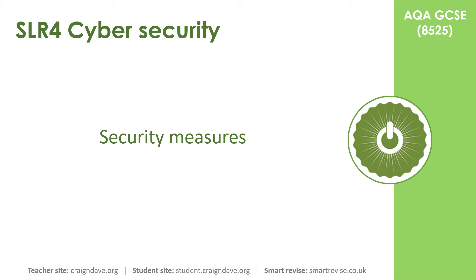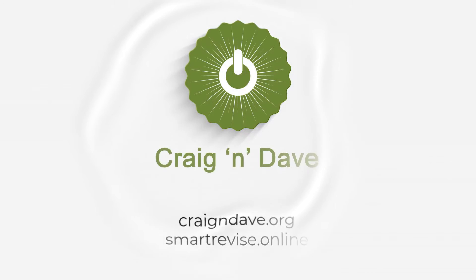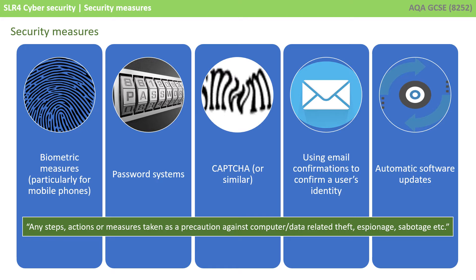In this video, we look at some of the security measures which companies and organisations can undertake to protect themselves. For the purpose of your exam, security measures simply mean any steps, actions or measures which are taken as a precaution against computer or data related theft, espionage, sabotage, etc. There are many security measures which people can employ to protect computer systems. There are five in specific you need to know about for the exam, and we're going to go over each of them in a little more detail.